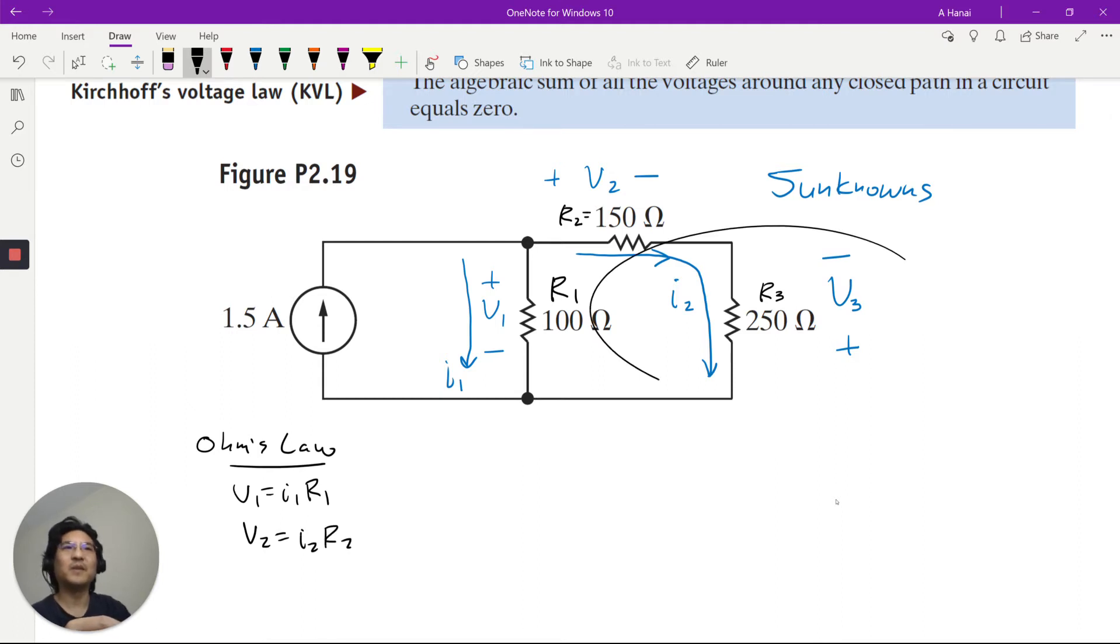Then how about this one? Voltage is positive going up, current is positive going down. So see how they're switched? So for that one, V equals negative IR. Alright, so just be careful with how things are labeled.